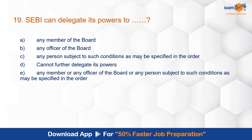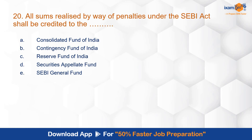Question 19: SEBI can delegate its powers to any member of the board, any officer of the board, or any person subject to such conditions as may be specified in the order. Any member, officer of the board, or person so delegated cannot further delegate those powers. The correct answer is E — SEBI can delegate its powers to any member, any officer of the board, or any person subject to conditions specified in the order. This is as per section 19 of the SEBI Act.